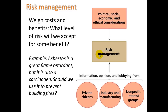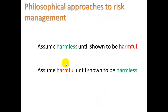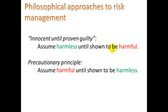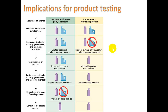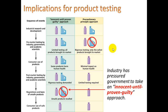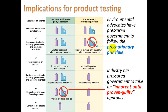When we do risk management, we do what's called cost-benefit analysis — what level of risk will we accept for some benefit? For example: asbestos is a great flame retardant but also a carcinogen. Should we use it to prevent building fires? You'd save some people from burning but cause cancer in others. There are two basic philosophical approaches to risk management. One is 'innocent until proven guilty' — assuming a substance is harmless until shown to be harmful. The other is the precautionary principle — assume it's harmful until shown to be harmless. Industry has pressured governments toward the innocent-until-proven-guilty approach to get products to market faster, while environmental advocates push for the precautionary principle.